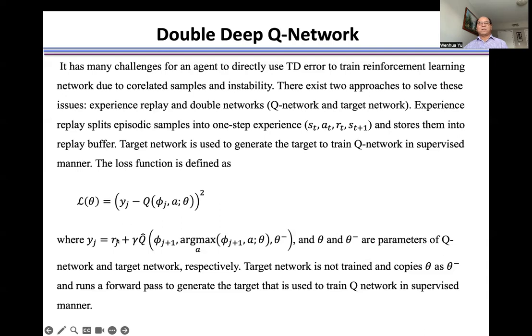Then run a forward pass to generate the Q-value function, and use this target to train the Q-Network in a supervised manner. When we get convergence, we can find the optimal driving policy.